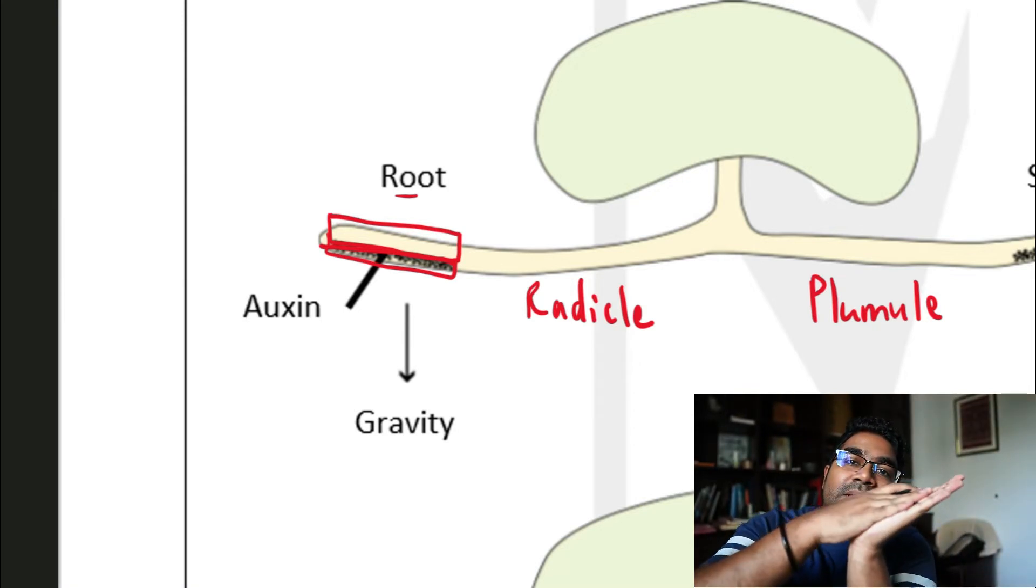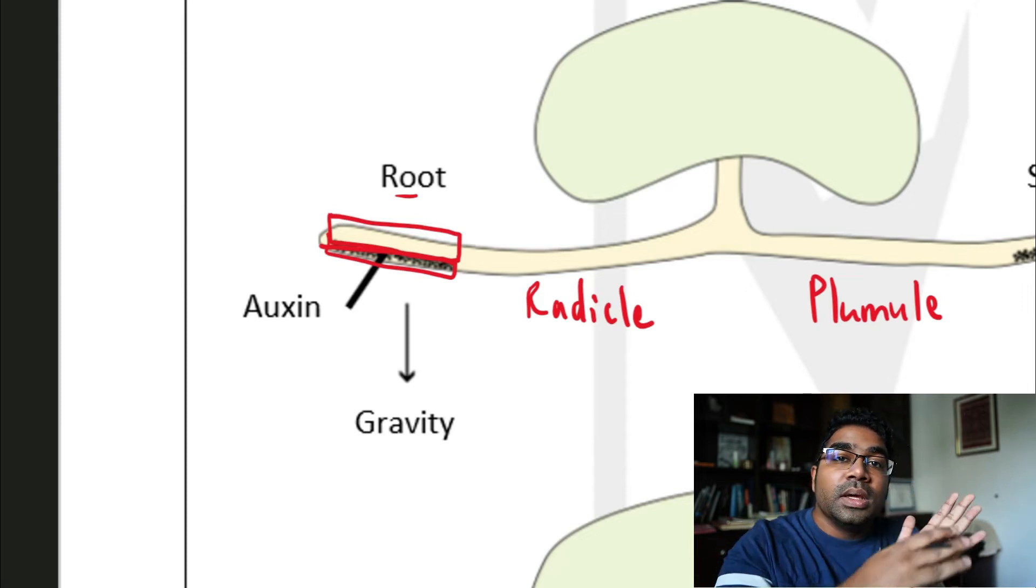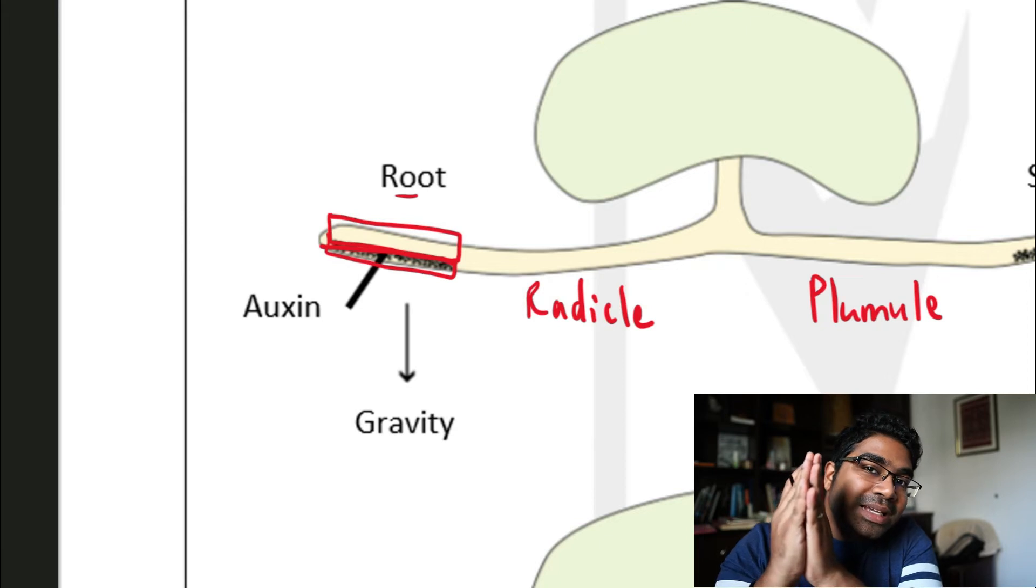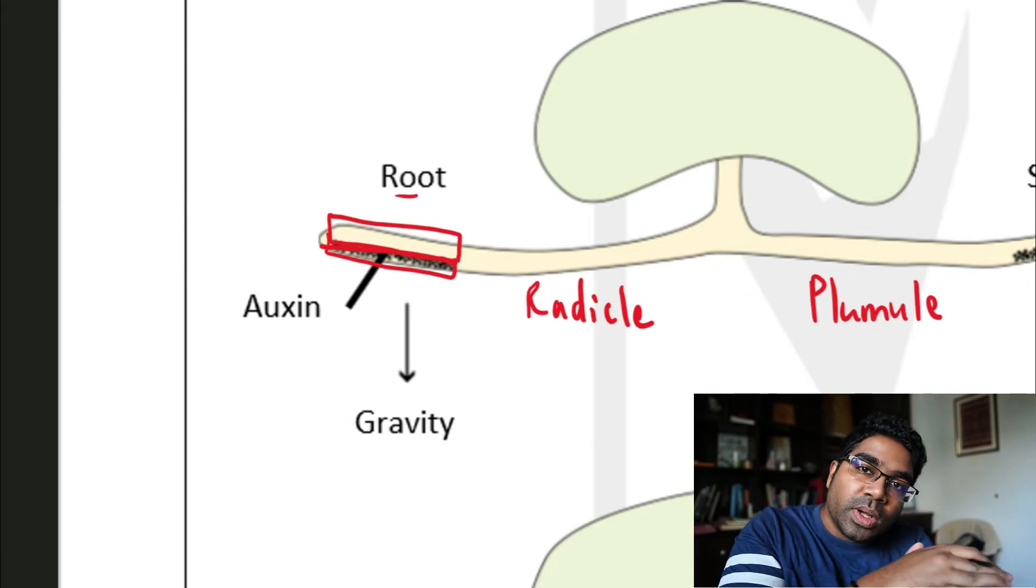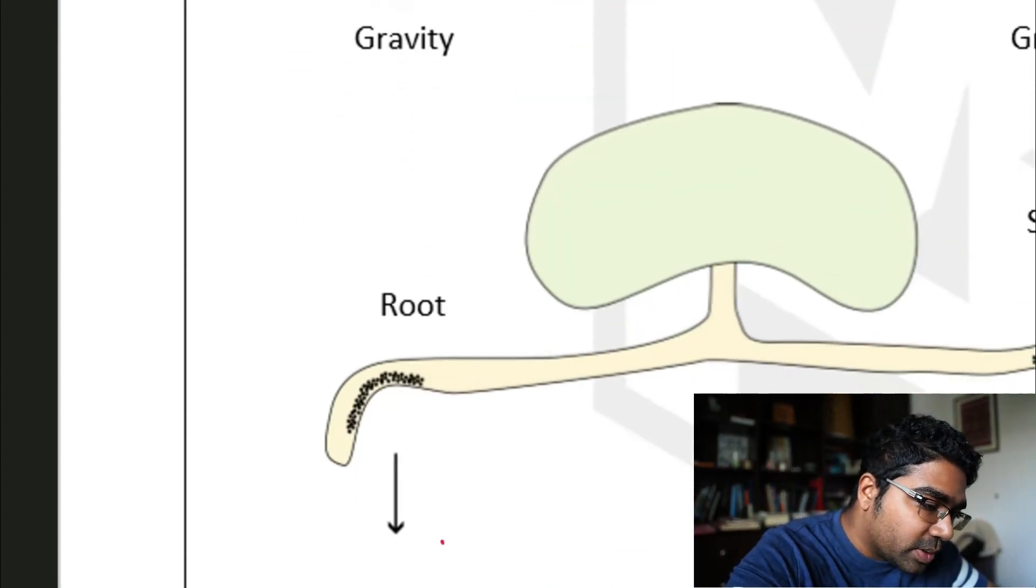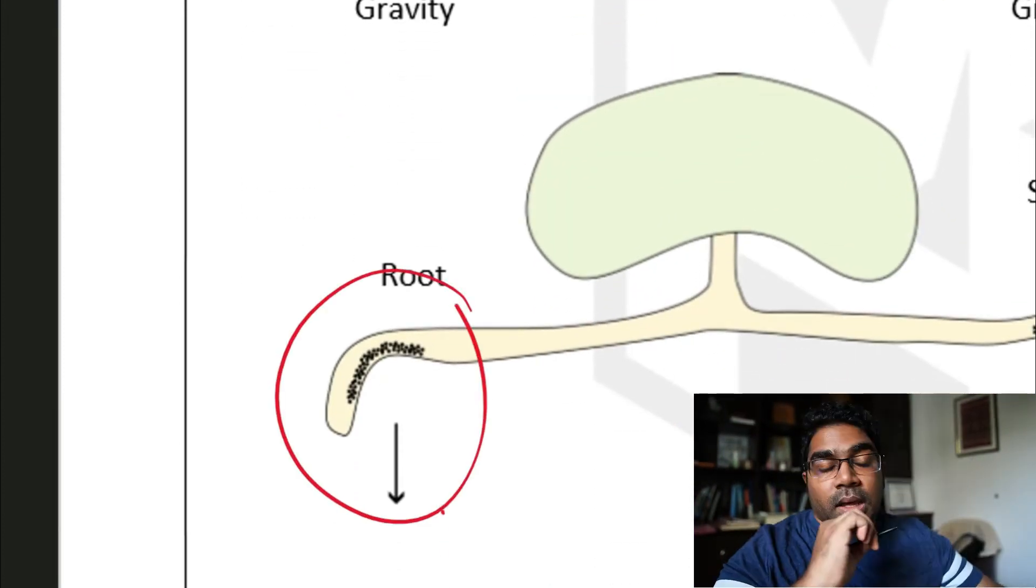Since the top grows faster than the bottom, this has an overall effect of the whole root bending downwards, because the top is growing more than the bottom. So this is what we get.